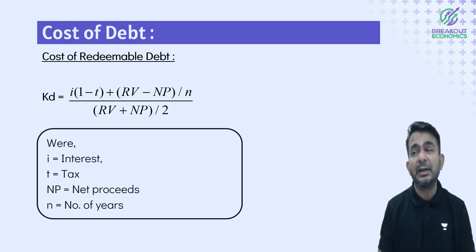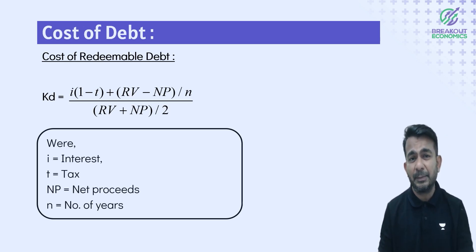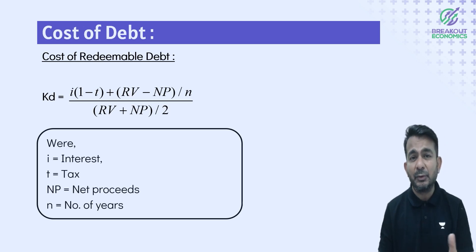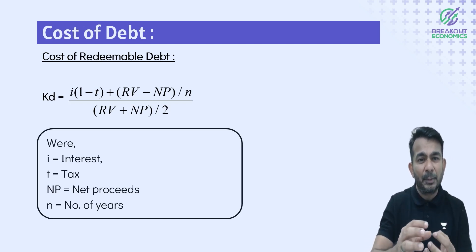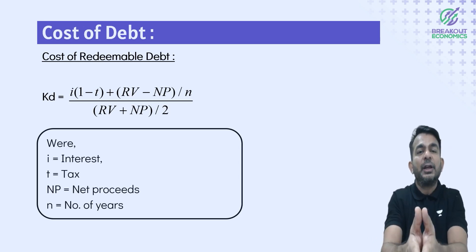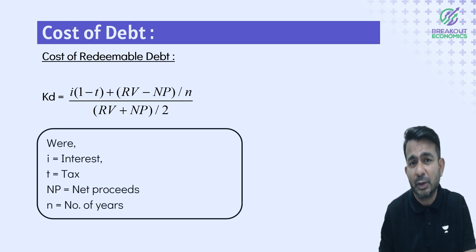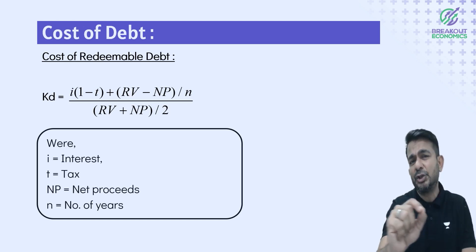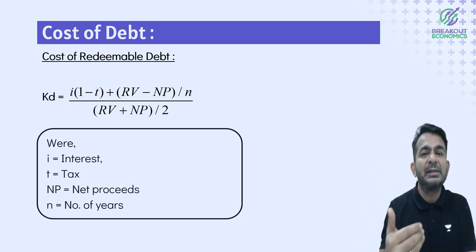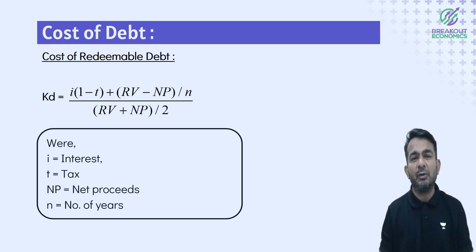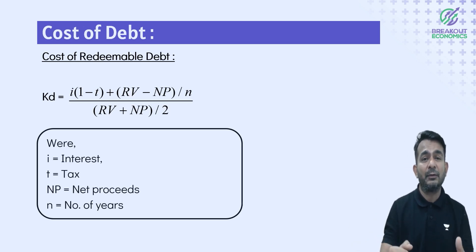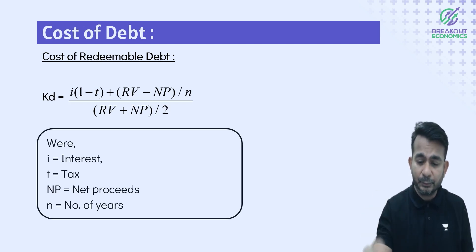For redeemable debt, we take I(1-T) because interest must be paid every year and has a tax shield. Then we add the amortized redemption difference: KD = [I(1-T) + (RV - NP)/N] / [(RV + NP)/2]. Here RV is redemption value, NP is net proceeds, and N is the number of years. The extra amount paid at redemption is also a cost, spread over the life of the debt.